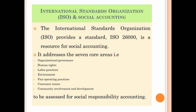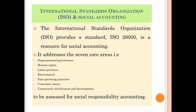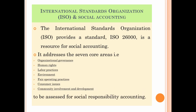Regarding the relationship between the International Standards Organization and social accounting, the ISO provided standard ISO 26000, which is a resource for social accounting. It addresses seven core areas: organizational governance, human rights, labor practices, environment, fair operating practices, consumer issues, and community involvement and development. These seven core areas are used by organizations to assess their social responsibility accounting.